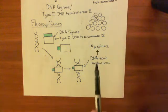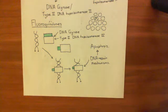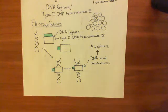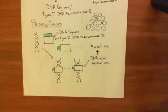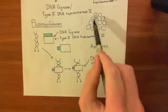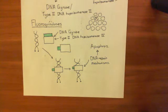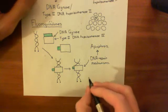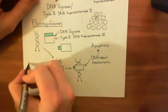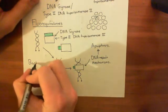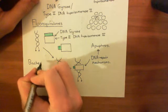What happens is far too much activation of the DNA repair mechanisms occurs, and the cell essentially thinks it's undergoing a genetic crisis. It concludes it can no longer cope, and commits suicide. That is how fluoroquinolones cause bactericidal effects — they are a bactericidal antibiotic because they actually kill bacteria, not just stop them dividing.